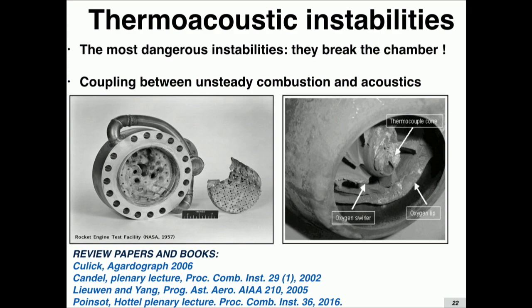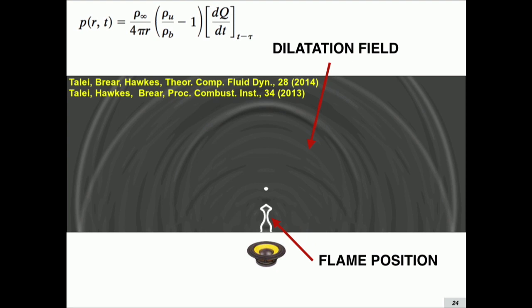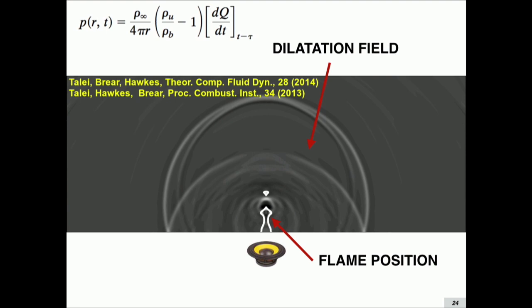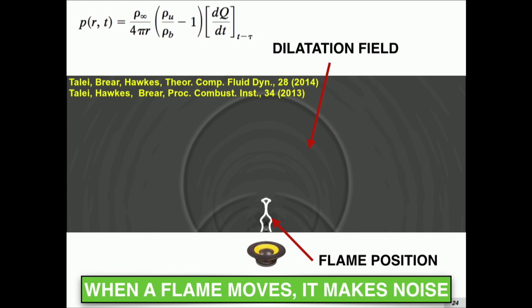That's an example of what happens if you have an instability in an engine — it was not designed to be this way. The reason why these things happen is that flames couple with noise. The first thing to know is that an unsteady flame, a flame which moves, will make noise. In this simulation, the white zone is the flame shape, and you see it's oscillating because we are pulsating it. Every time the flame disappears here, you see waves — this is divergence of the velocity, so this is noise.